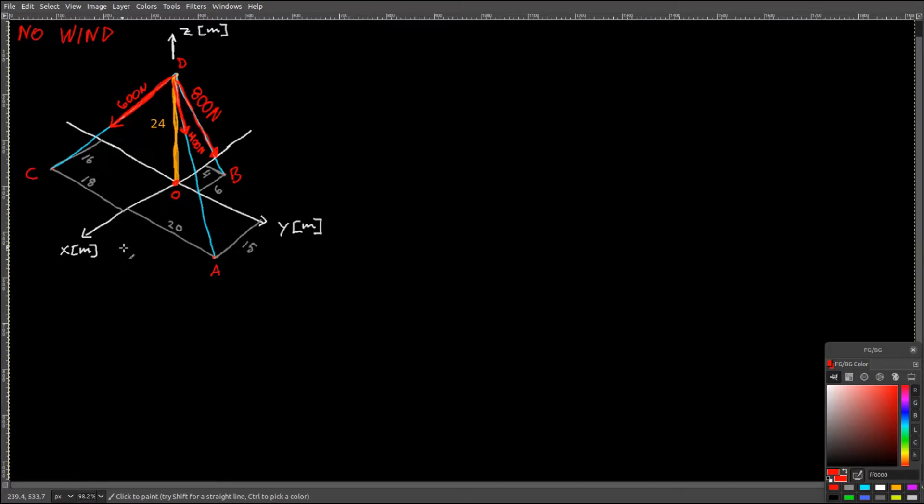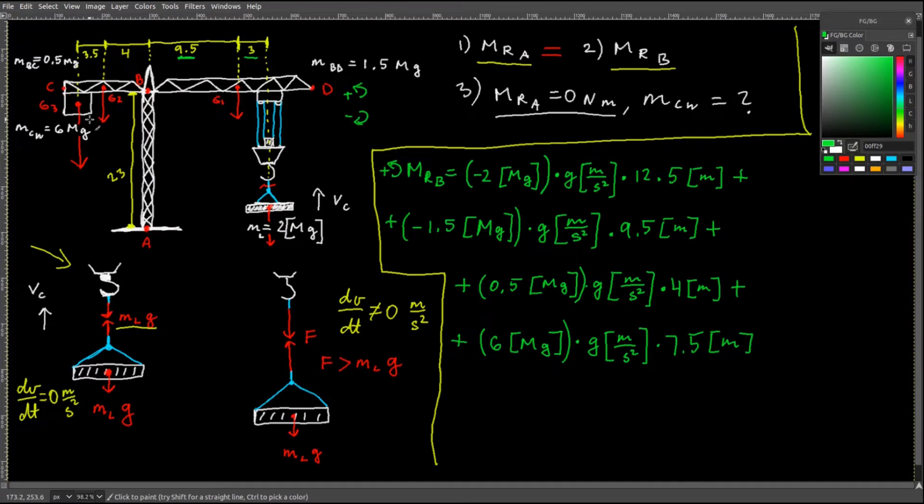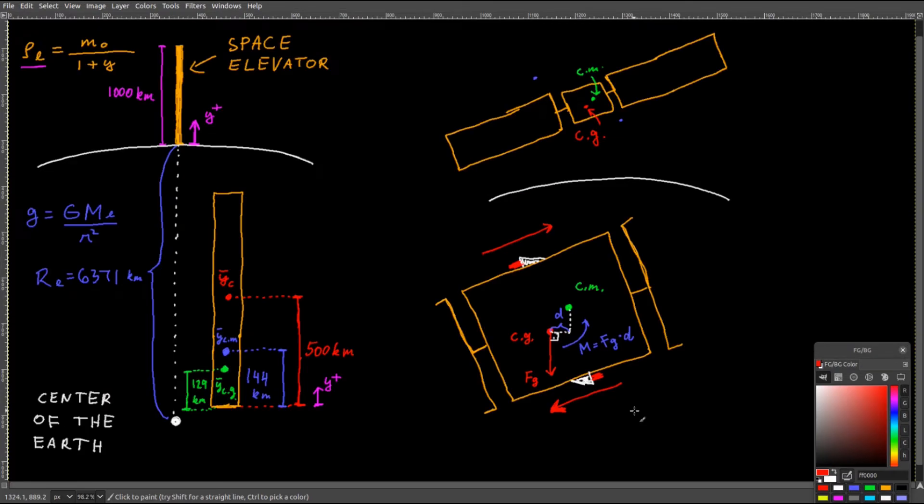How would you stabilize a tower using cables or calculate the distance between two structures or find the right counterweight for a crane so that it would not fall over? Would you like to know the difference between centroid, centers of mass and gravity, and center of pressure?